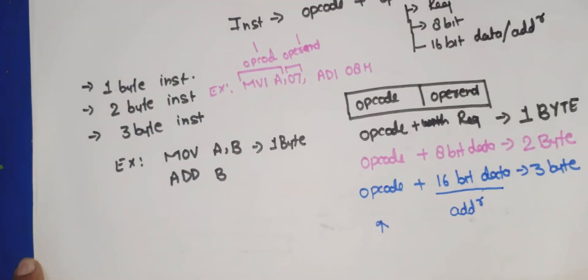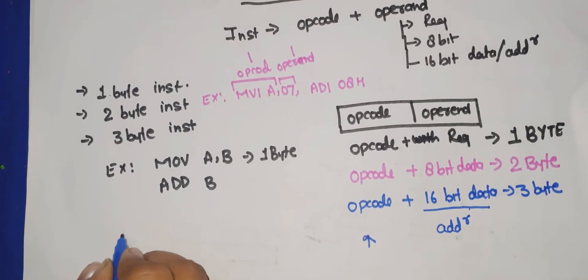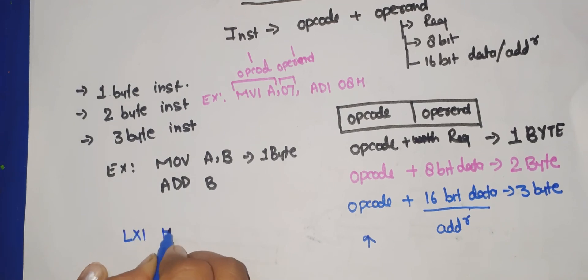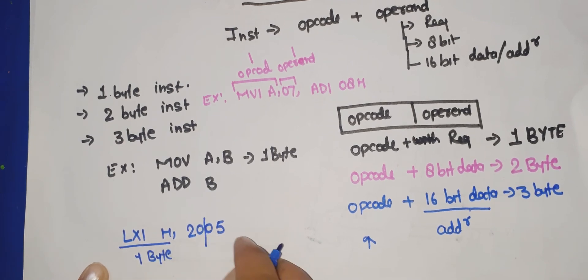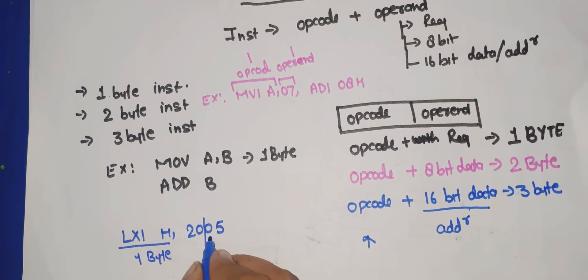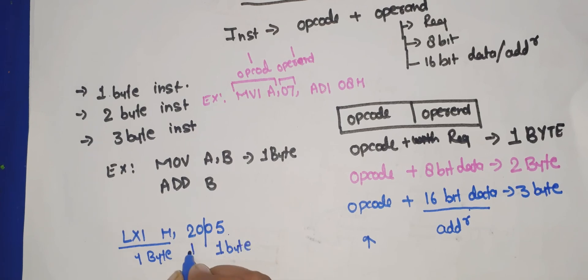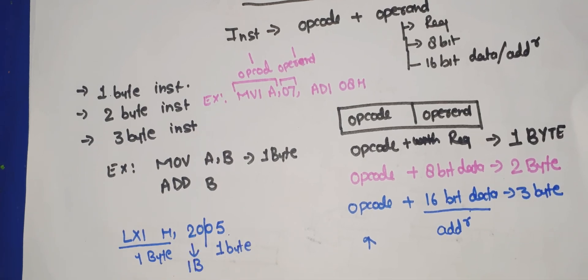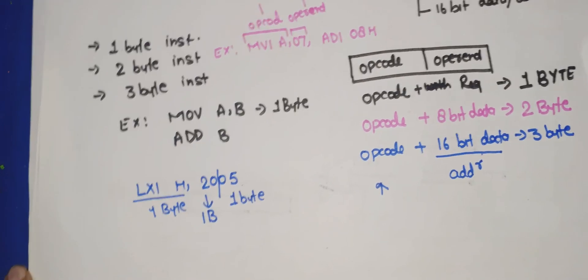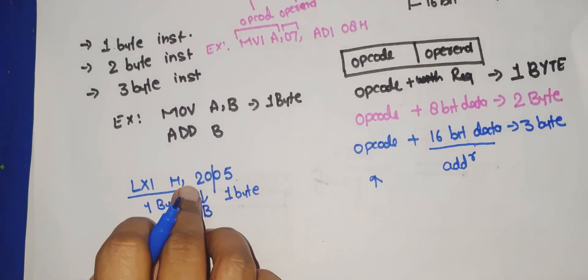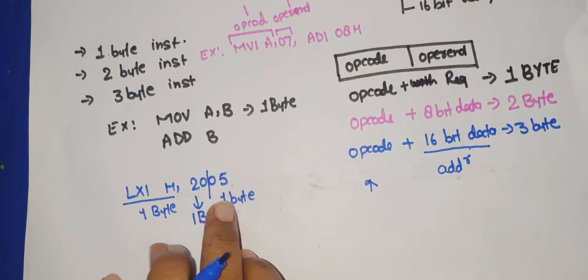For example, consider the three-byte instruction LXI H,2005. LXI H takes one byte for the opcode, and the address 2005 is divided into two bytes — one byte for 05 and one byte for 20 — so the total is three bytes. This value 2005 can be a data value or an address, since it is loaded into the HL pair.